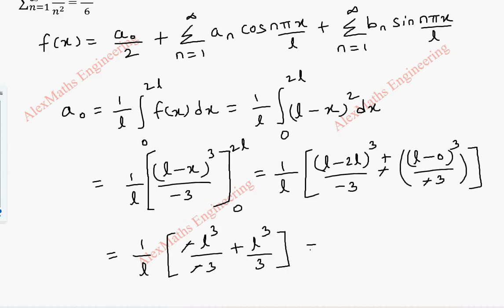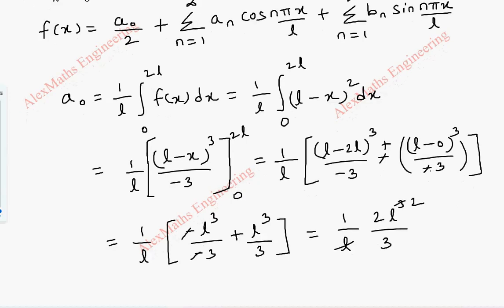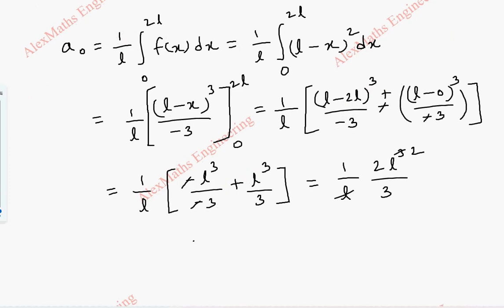So totally this is (1/L) × (2L³/3). We can cancel one L, so finally we get a0 = 2L²/3. So we got the first part, that is a0.